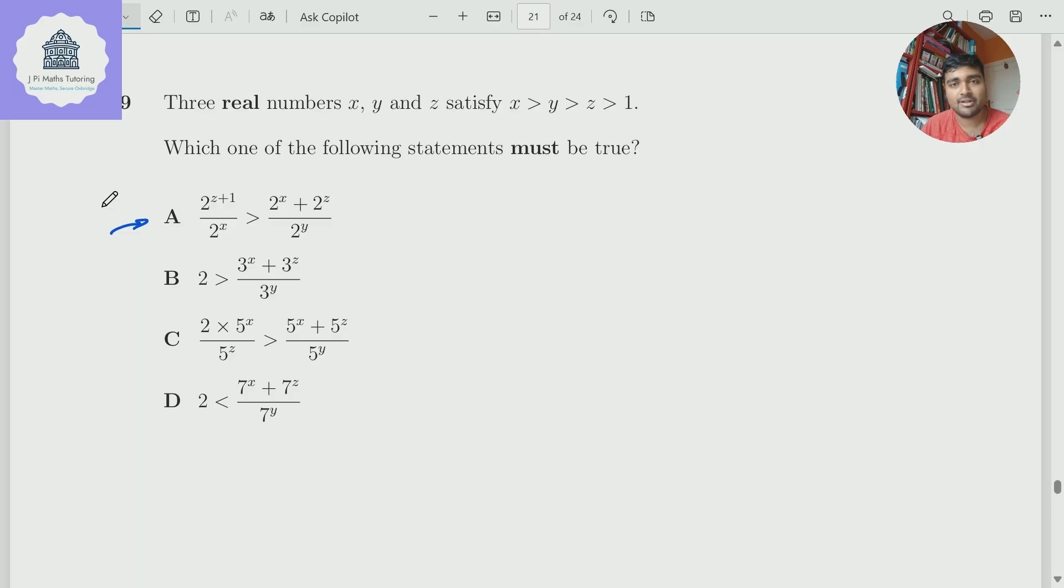Now, what most students do is when they're looking for a counterexample, they just plug in completely random numbers, X, Y, and Z, which is kind of like closing your eyes and throwing a dartboard. It's not very systematic. You're not going to hit bullseye very often. So what could we do? One thing that's quite useful is actually think about limiting values. And that's what we're going to do here.